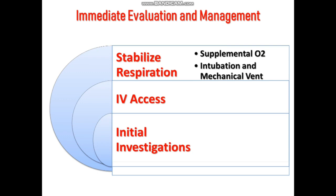We can have both peripheral or central access. The initial access should be peripheral because it's easy and readily available, and then we need central access to infuse a large volume of IV fluids, blood products, or vasopressors. We need the central line also to measure treatment response.